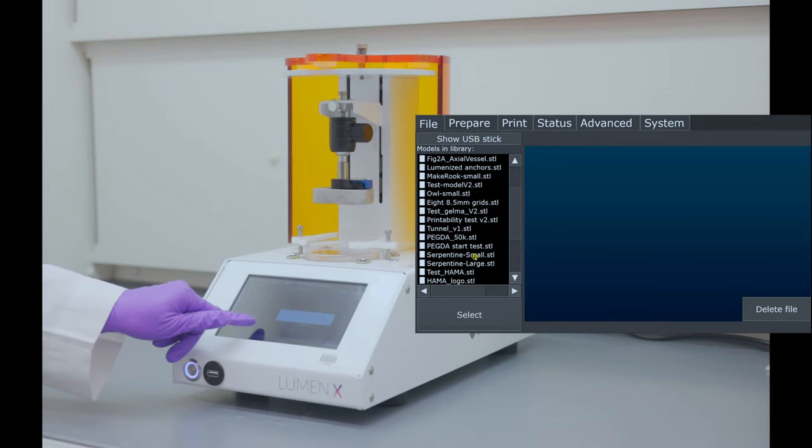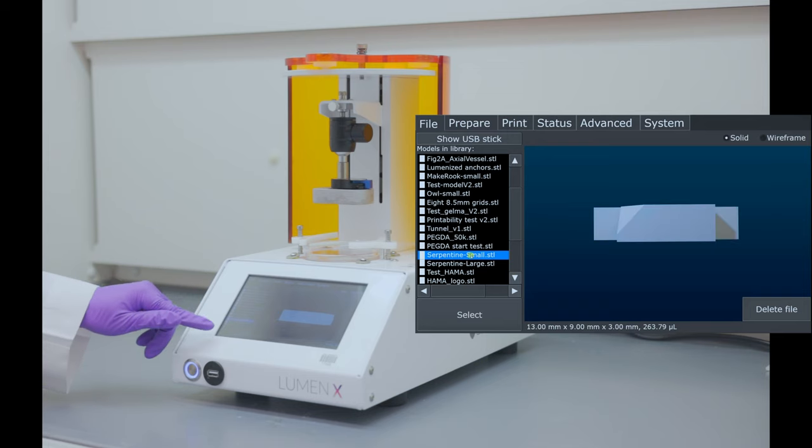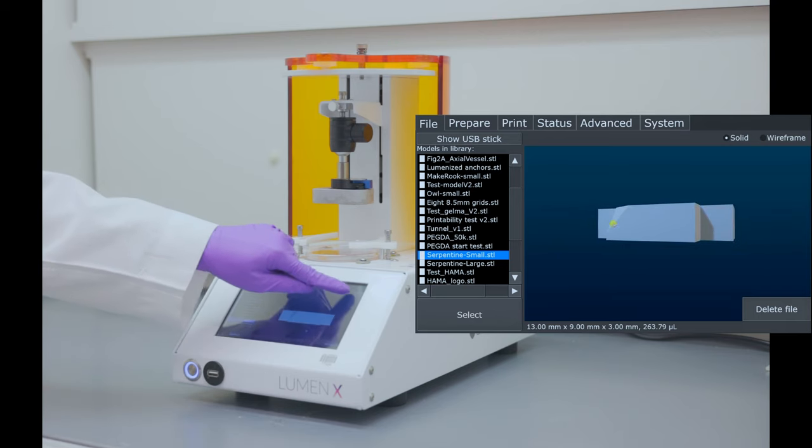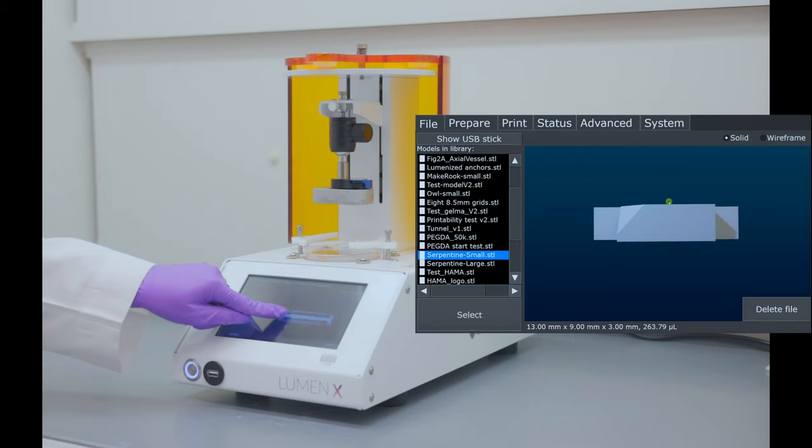Today, we will be printing a serpentine small model. Tap on the file and the 3D model can be seen here on the screen. We can turn it around. We can check the wireframe mode to look at the model in wireframe and to look at the internal structure of the model.